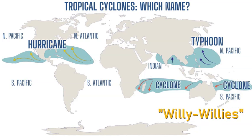Then you have the cyclones. A Willy Willy is also a name for it — the Australians have to call it a really cool name because Australians are really awesome. A cyclone or Willy Willy is what forms in the southern Pacific Ocean moving towards Australia, and also a cyclone off the western Australian coastline going west across the Indian Ocean towards countries like Madagascar and the east coast of southern Africa.